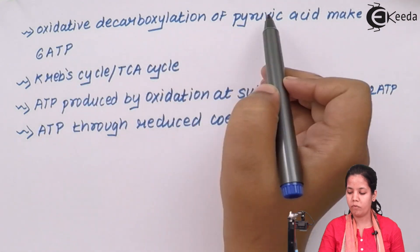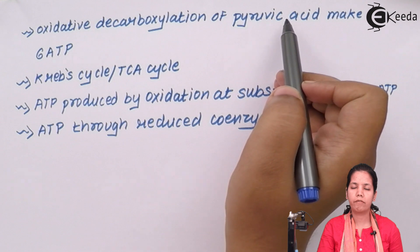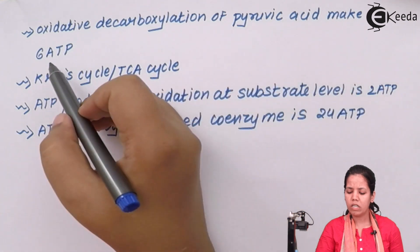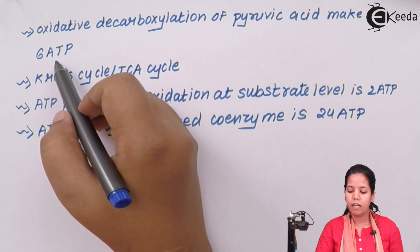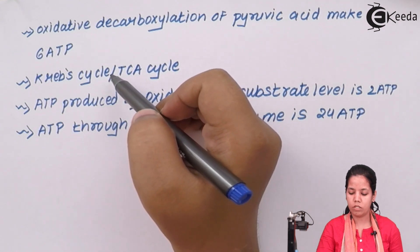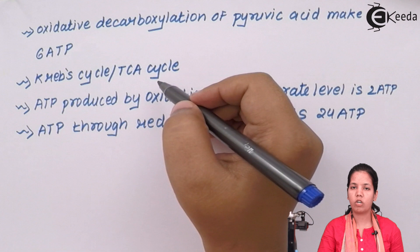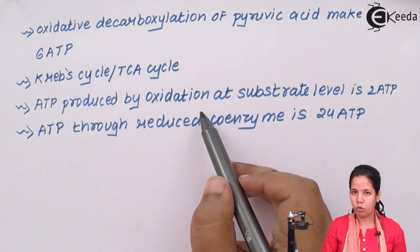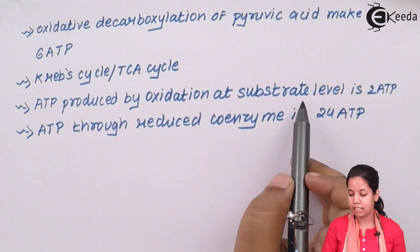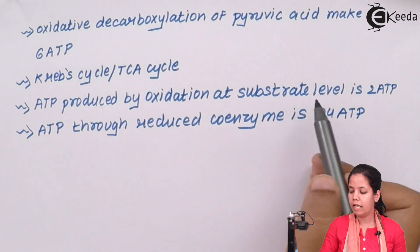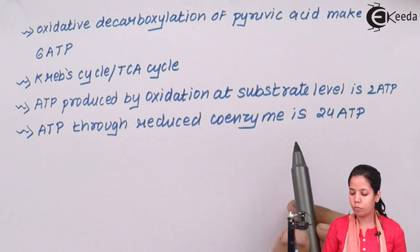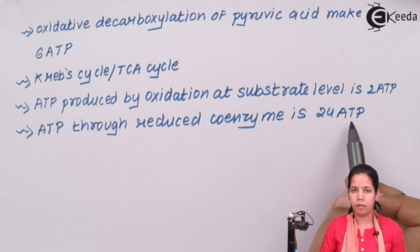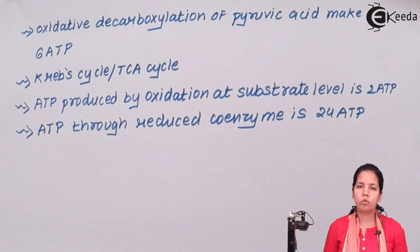During oxidative decarboxylation of pyruvic acid — the step after glycolysis and just before the Krebs cycle — the ATP formed is 6 ATP. In the Krebs cycle or TCA cycle, ATP produced by oxidation at substrate level is 2 ATP, and ATP produced by reduction of coenzymes like NADH and FADH2 is 24 ATP.